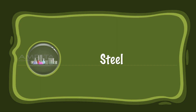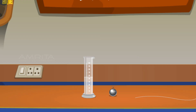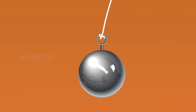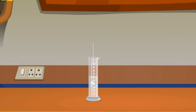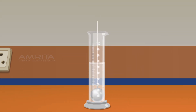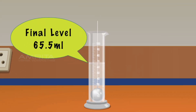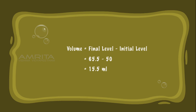Steel. Use a steel ball, a piece of twine, and 50 ml water in a 100 ml beaker. Tie the steel ball using the twine. Immerse the steel ball in the beaker holding the free end of the twine. The water level goes up to 65.5 ml. The volume of water displaced is 15.5 ml.